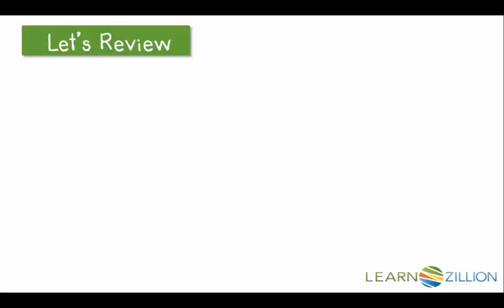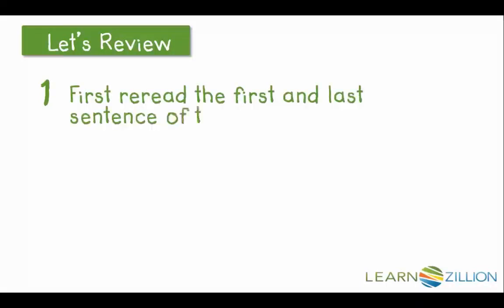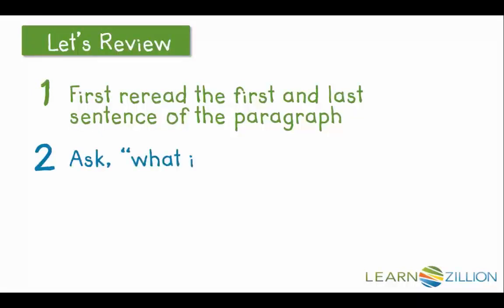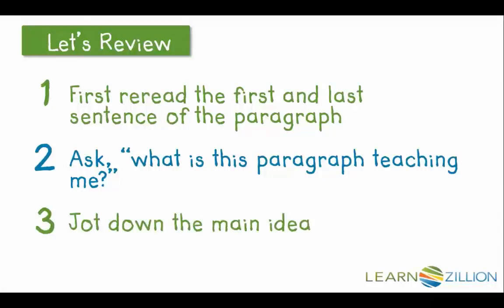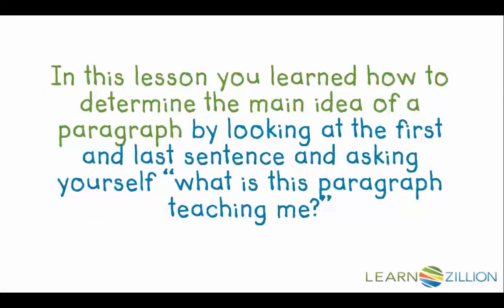In review, after reading each paragraph, here's what you need to do. First, reread the first and last sentence. Second, ask, what is this paragraph teaching me? Finally, jot down the main idea. In this lesson, you learned how to determine the main idea of a paragraph by looking at the first and last sentence and asking yourself, what is this paragraph teaching me?